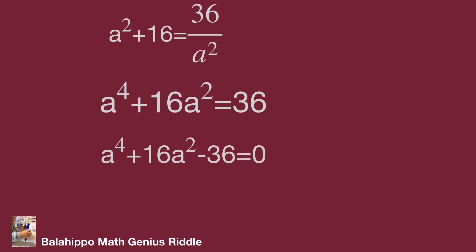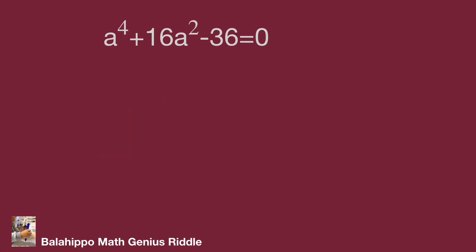We have a⁴ + 16a² - 36 = 0. It's a nice equation, easy to find the factors.